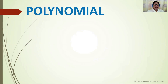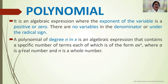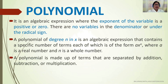What is a polynomial? It is an algebraic expression where the exponent of the variable is a positive integer or zero. There are no variables in the denominator or under the radical sign. A polynomial of degree n in x is an algebraic expression that contains a specific number of terms, each of which is of the form ax raised to n, where a is a real number and n is a whole number. A polynomial is made up of terms that are separated by addition, subtraction, or multiplication.